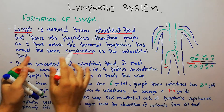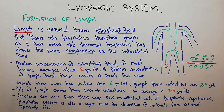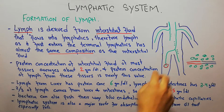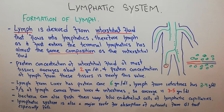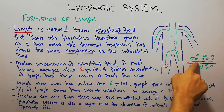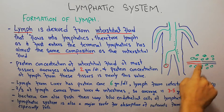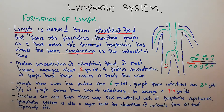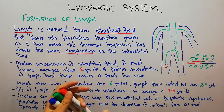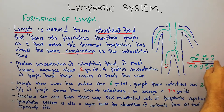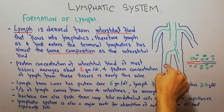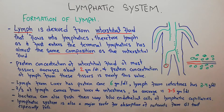Lymph initially is interstitial fluid, but lymphatics carry large molecules and large particles like proteins, which cannot be absorbed into the small capillaries because of the structure of the capillary wall. We have separately discussed the structure of the capillary wall and also the structure of the lymphatic capillary.